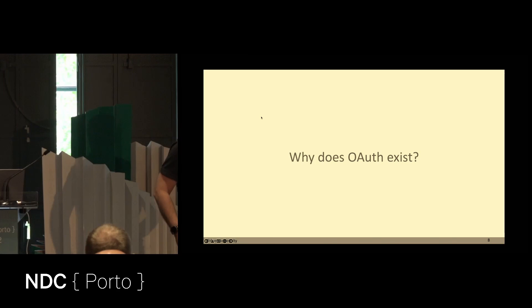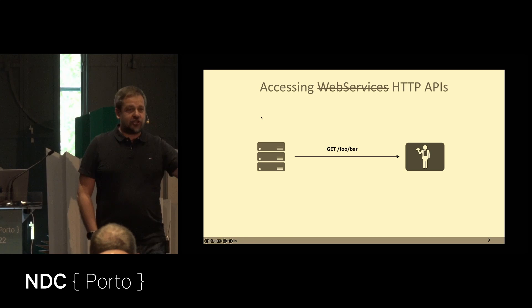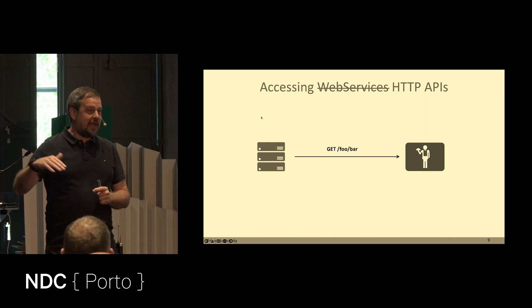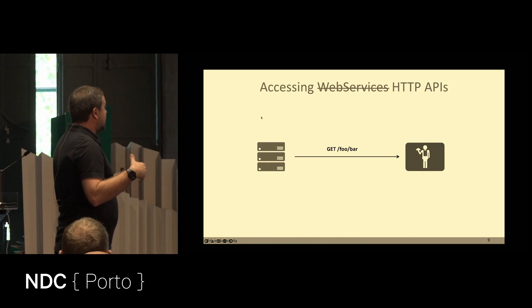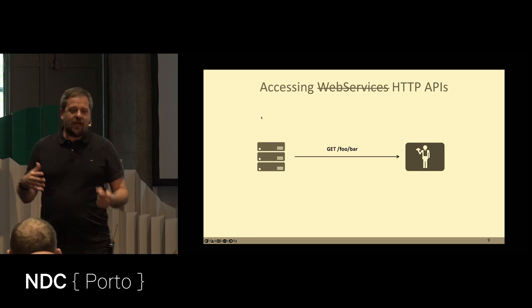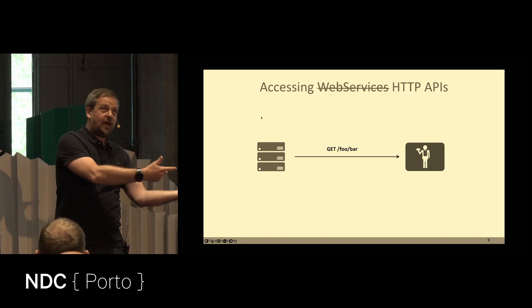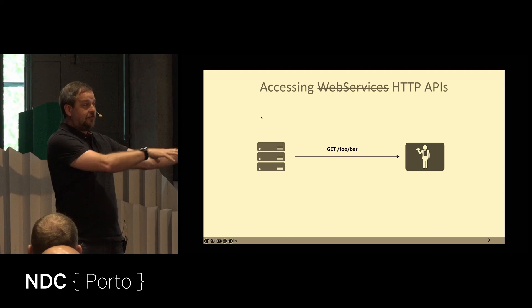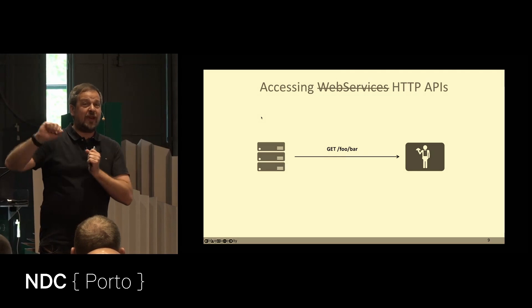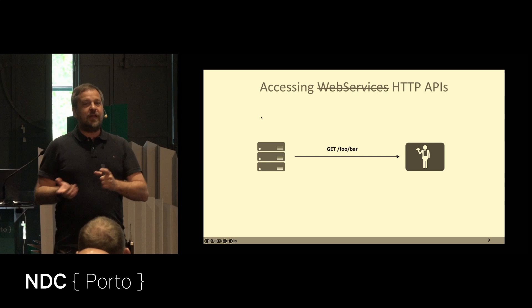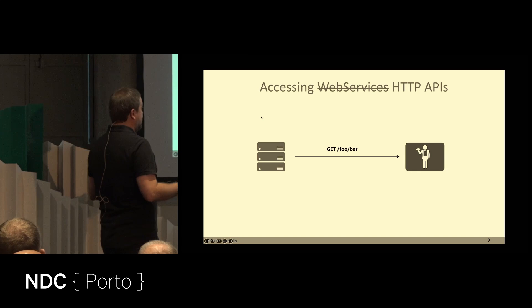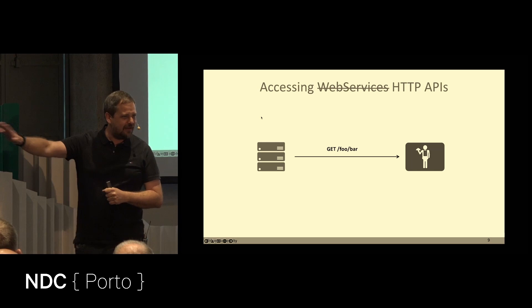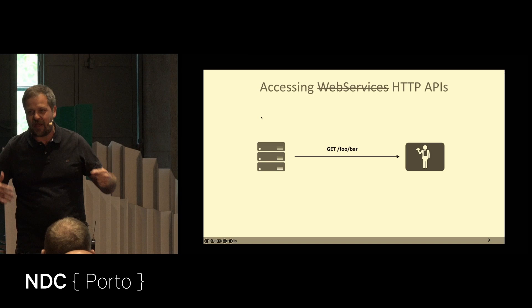Why does OAuth exist? It was a direct reaction to the enterprise world of the early 2000s — XML, SOAP, namespaces, and all that complicated stuff. Google basically said: we're building these consumer-facing APIs and we have a very simple problem to solve. How can you give a third party access to your Google Calendar without exposing your password to that third party? They didn't want you to type your Google password into a third-party service. They wanted something that allows you to grant someone access to data, or even a subset of your data, without exposing your master secret.